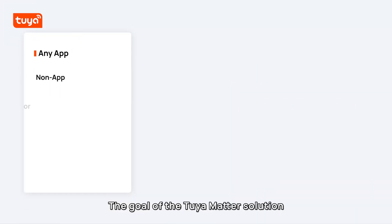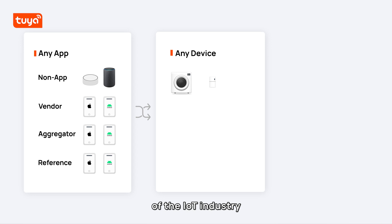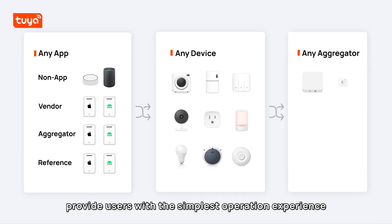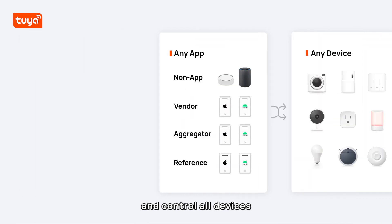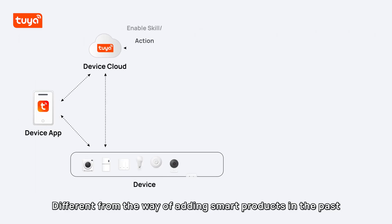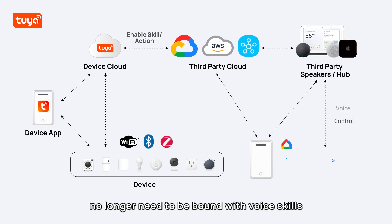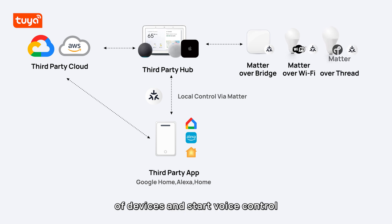The goal of the Tuya Matter solution is to become the USB interface of the IoT industry — providing users with the simplest operation experience, connecting all applications, and controlling all devices. Different from the way of adding smart products in the past, Matter devices no longer need to be bound with voice skills, and can directly complete local connection of devices and start voice control.